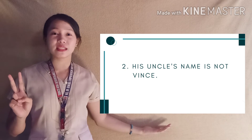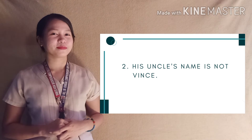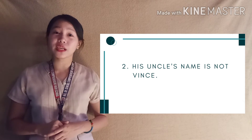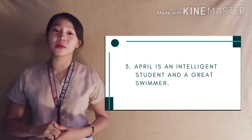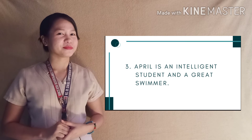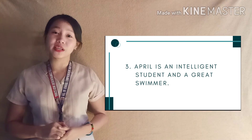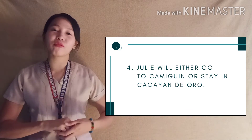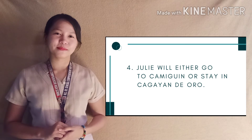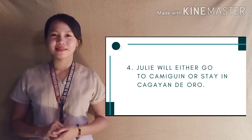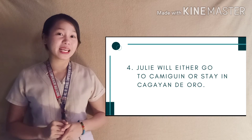Number 2: His uncle's name is not Vince. What type of proposition is this? You're right — it's a simple proposition in negation form. Number 3: April is an intelligent student and a great swimmer. What type of proposition is this? You're right — it's a compound proposition and it's a conjunction. Number 4: Julie will either go to Camiguin or stay in Cagayan de Oro. What type of proposition is this? You're right — it's a compound proposition and it is a disjunction.